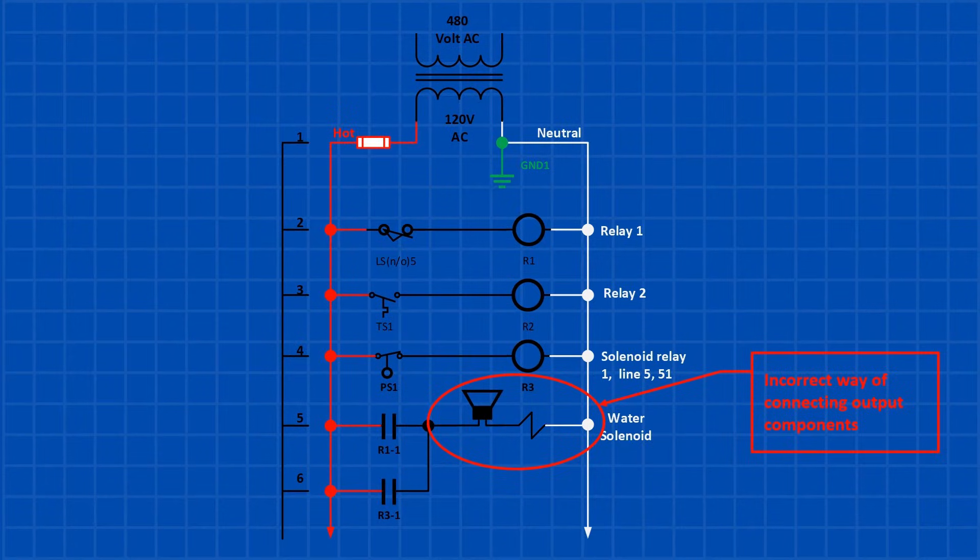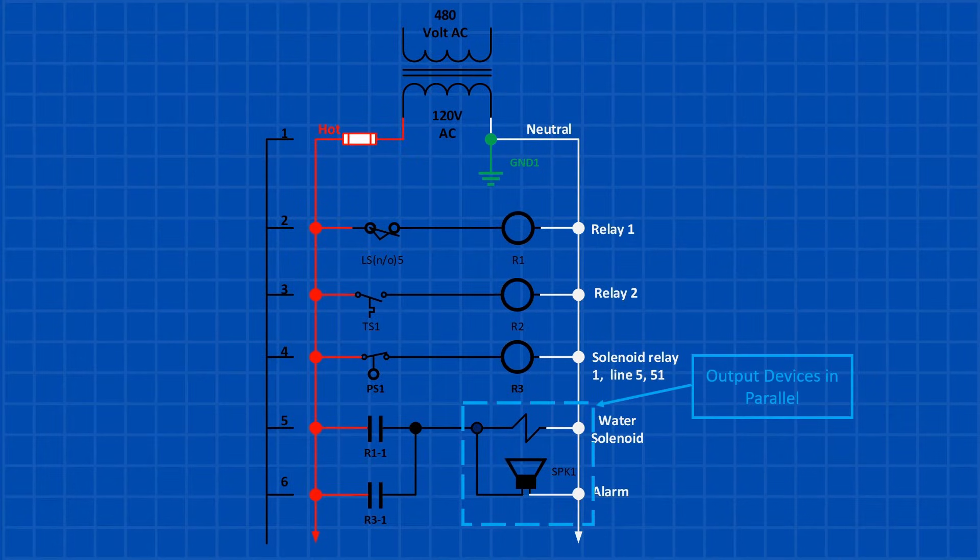Output devices should never be connected in series. Doing so causes a voltage drop across each device, preventing them from functioning properly. Instead, they should be wired in parallel. For example, on lines 5 and 6, the water solenoid and alarm speaker are correctly wired in parallel to ensure proper operation.